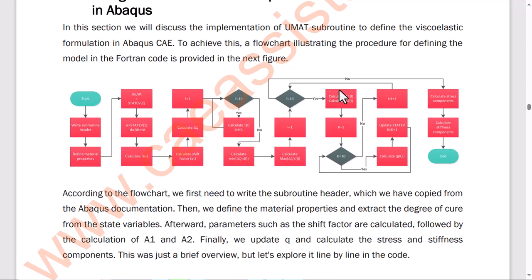To achieve this, a flowchart illustrating the procedure for defining the model in the FORTRAN code is provided in the next figure. According to the flowchart, we first need to write the subroutine header, which we have copied from the Abaqus documentation. Then we define the material properties and extract the degree of cure from the state variables.